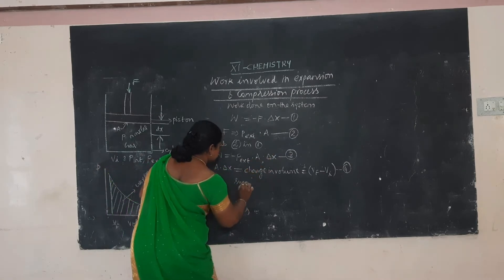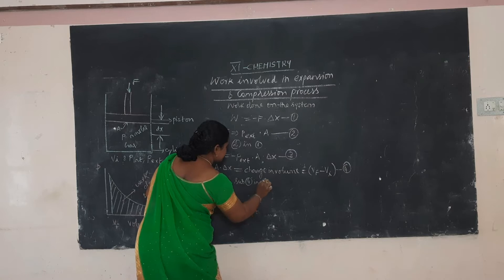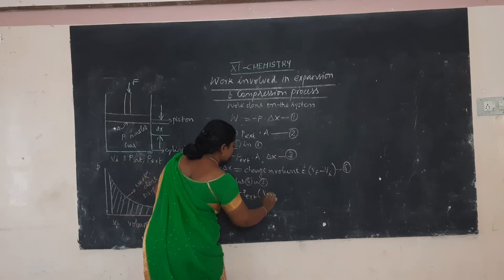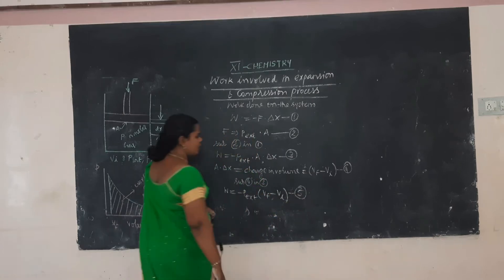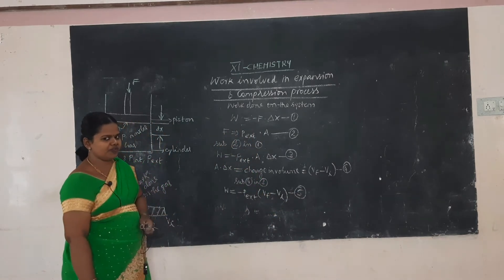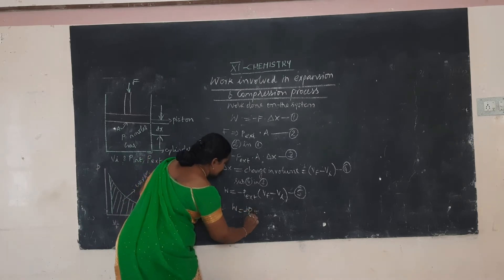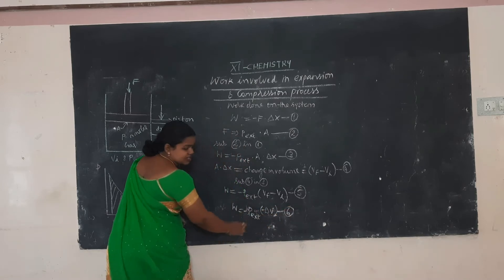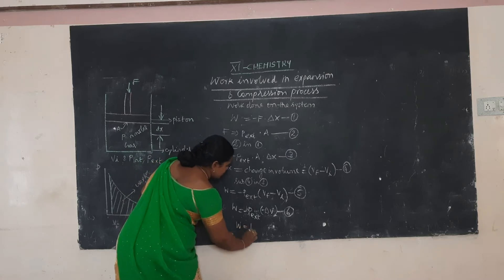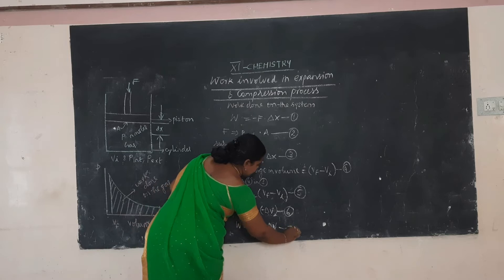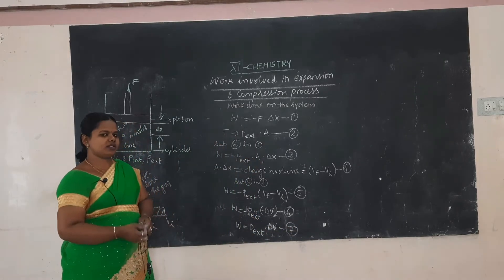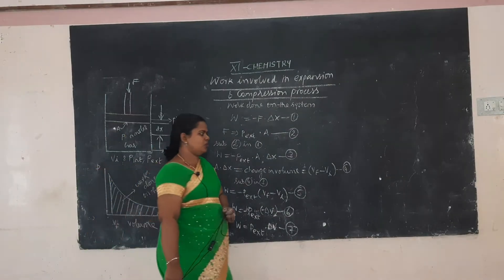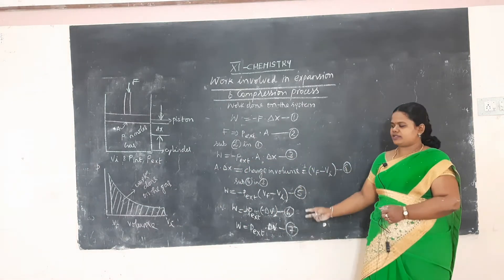Substituting equation 4 into equation 3, we get W = -P_ext × (V_F - V_I) — the fifth equation. Since V_F - V_I = ΔV, substituting gives W = -P_ext × ΔV — the sixth equation. With minus minus giving plus, W = P_ext × ΔV. This shows that work is done on the system and the sign convention is positive.